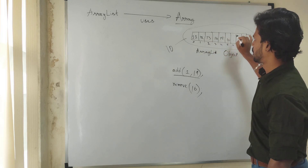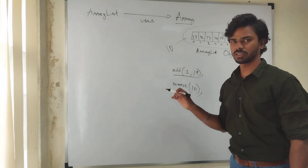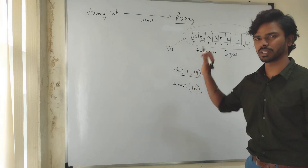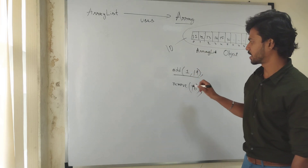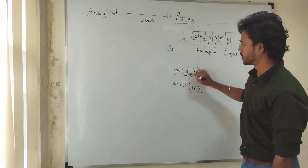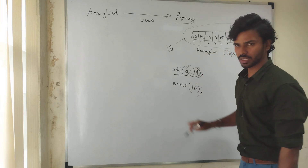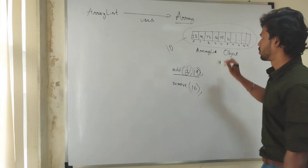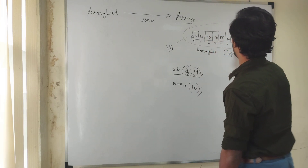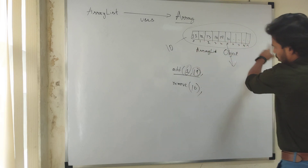All the elements are stored one by one, side by side, as a continuous sequence. Now if I want to add any element in between at a particular index — suppose I add a new value at index number one — whenever I am adding a new element at index number one, immediately all the elements will be shuffled.